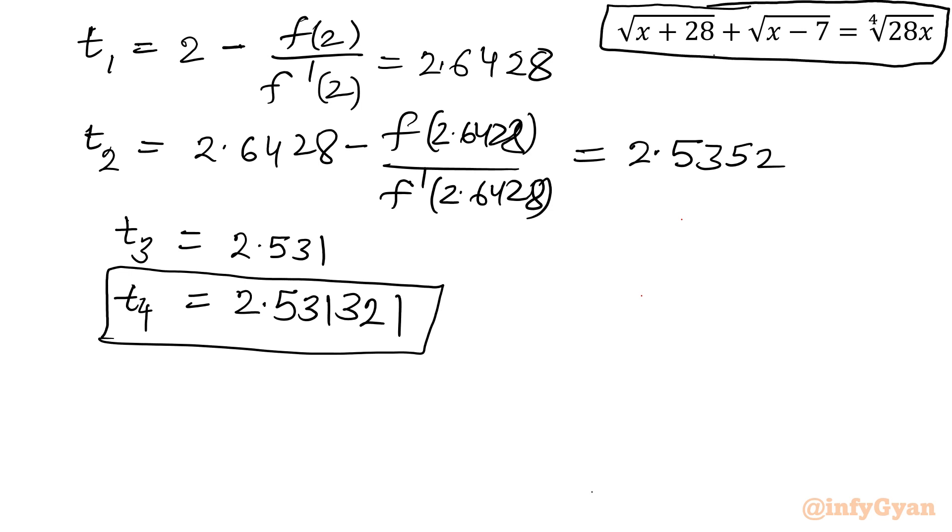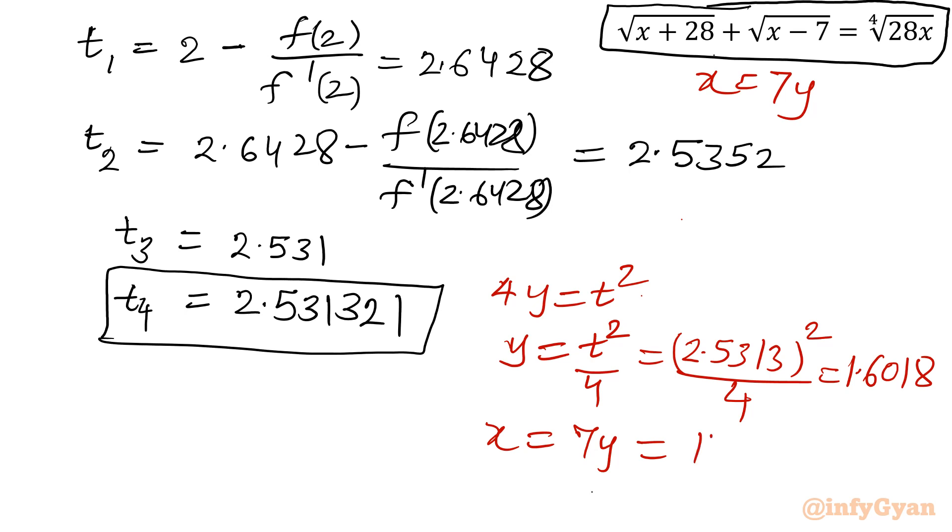Now we have not converted this t into x, so t is there only. Now substitution number 1, let me come back. Our substitution was 4y is equal to t square, so first we will find out y: t square over 4. So you will write 2.5313 whole square over 4. This value is coming out 1.6018. And x, if you remember we started the problem, x is equal to 7y. So 7y, this value will be 11.2132 and so on. So ultimate solution is x is equal to 11.2132.